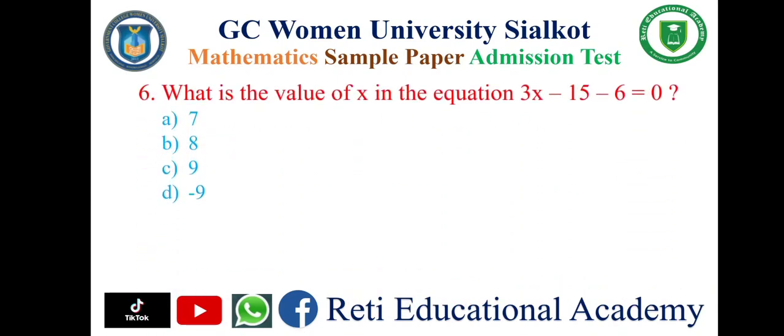Question number six: What is the value of x in the equation 3x minus 5 — 15 minus 6 is equal to 0? A: 7, B: 8, C: 9, D: minus 9. And the correct answer is A: 7.